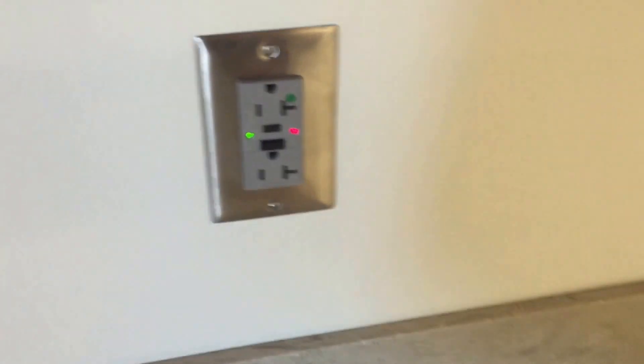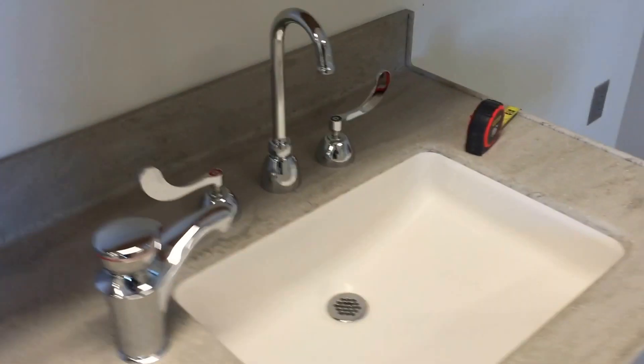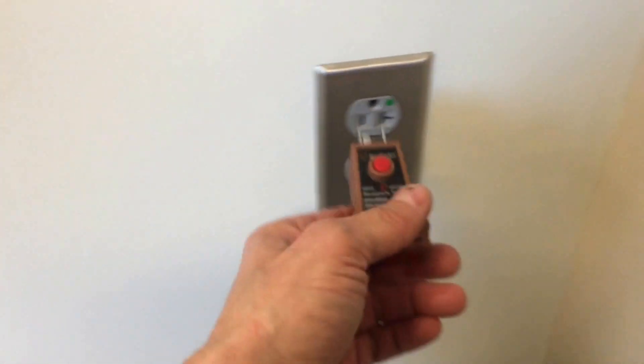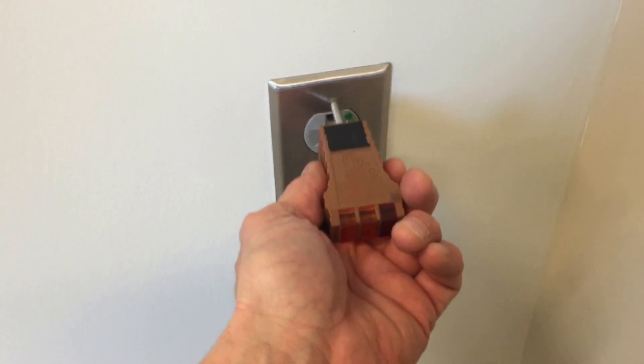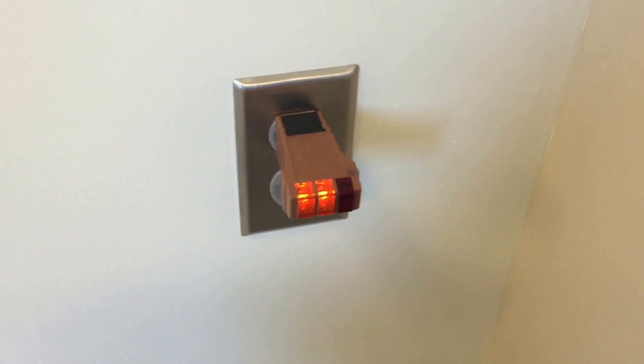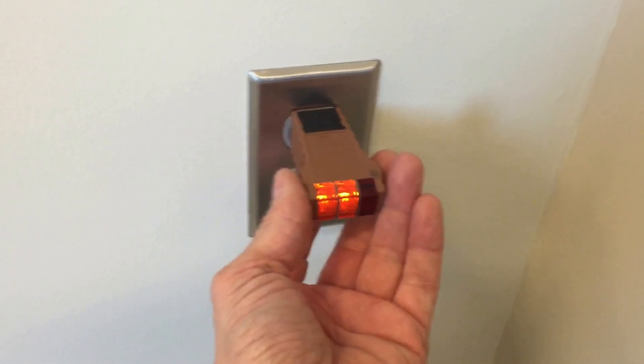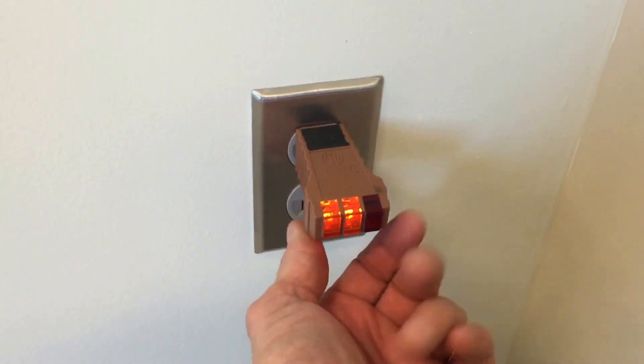Now the reason I did that was to show you that this receptacle over here is not GFCI protected. I'm going to plug my tester in so the receptacle has power. When I push the test button, nothing happens. The plug remains energized. It should trip.